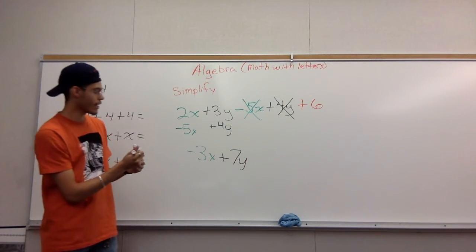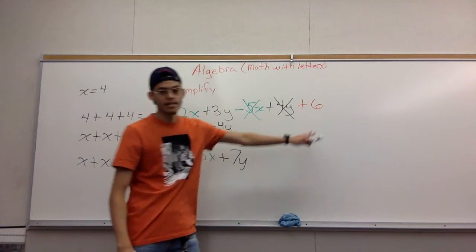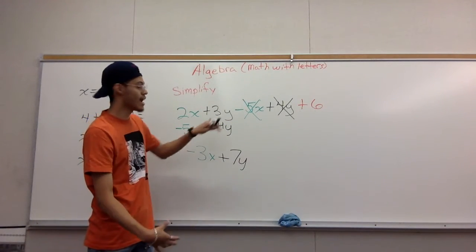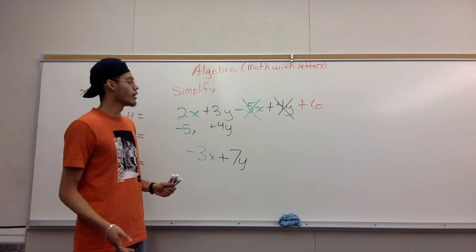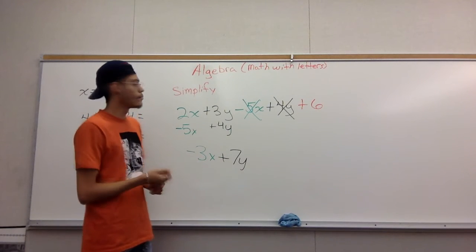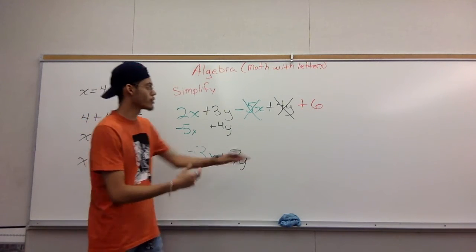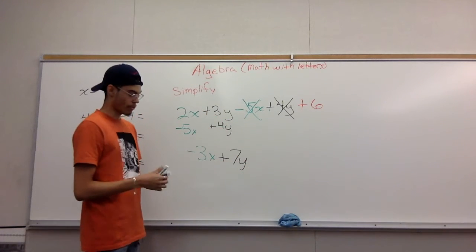And right here, this 6. This 6 doesn't have an x or a y. Does it have any letter? And it doesn't have any pair to match with to bring them together. So it's just by itself, and you just bring it down to the problem.